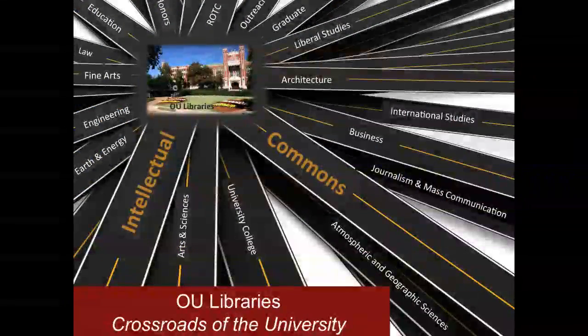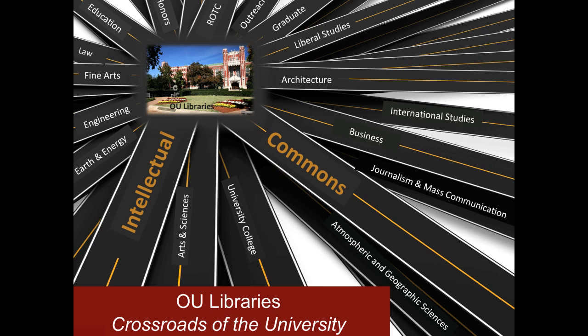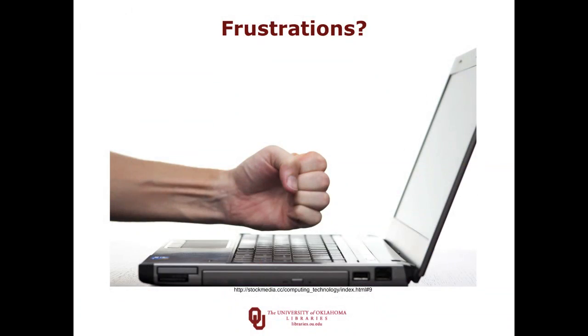Let me tell you how we position the OU libraries on the campus, because it plays an important role in the software we put in place. What we're really trying to do is position the library as the crossroads of the university — the intellectual commons, where all ideas from all the colleges come together. We want to expose ideas, have them analyzed, refined, and promoted. We use research and our facilities to highlight those activities and help students build new knowledge. The software we put in place has to fulfill that mission and support that intellectual commons. Which brings me to the main focus of today's presentation: our reading list.